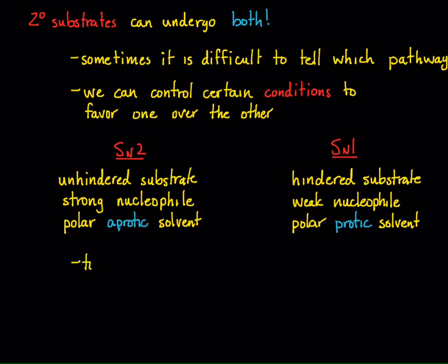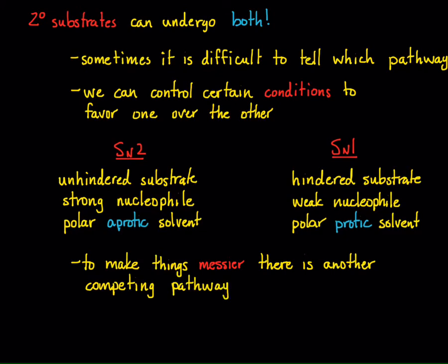In the next chapter, we're going to see that there is actually another competing pathway that these reactions can undergo, and that pathway is called elimination. Substitution and elimination are competing pathways. So not only do we have to think about what mechanism — SN1 versus SN2 — but we also have to think about the conditions that favor substitution versus elimination. That's what we have to look forward to in Chapter 8.